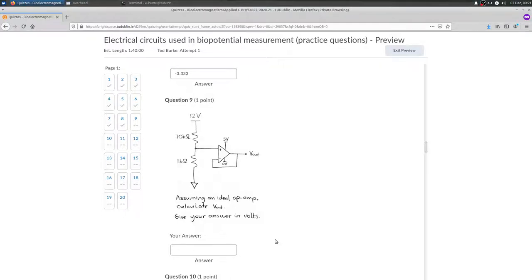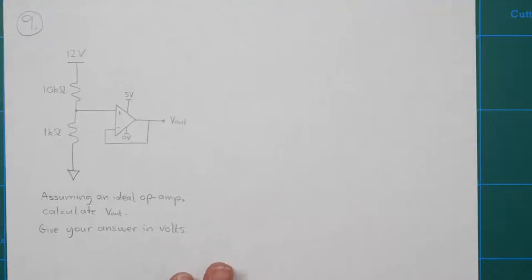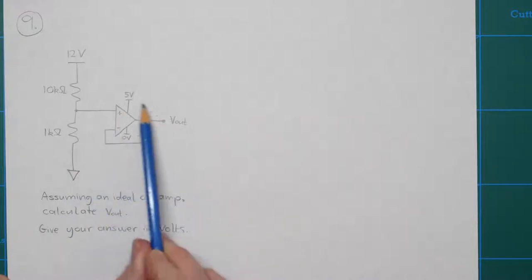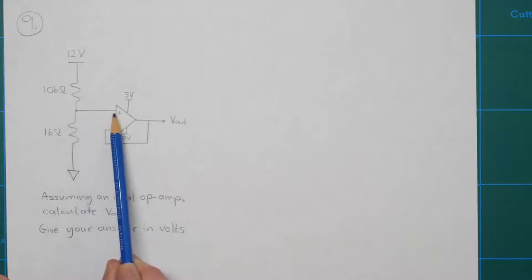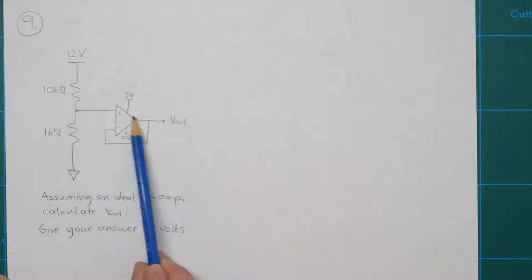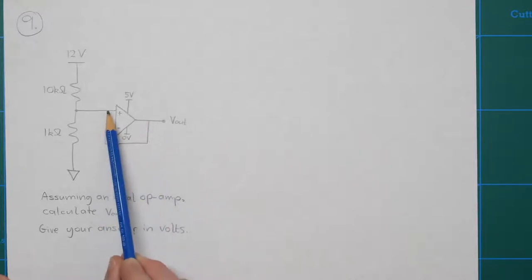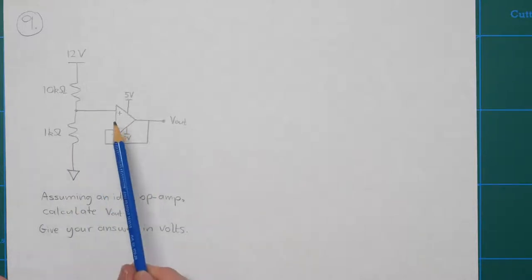Question 9 is the first of the op-amp questions. We've got a voltage divider and an op-amp wired as a unity gain buffer, which means the voltage at the input is going to be replicated at the output. The op-amp is always pushing the voltage up and down to try to get its two terminals in balance — that's what happens when it's wired for negative feedback, which is how the unity gain buffer works.